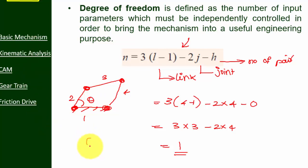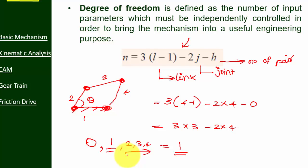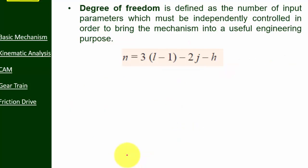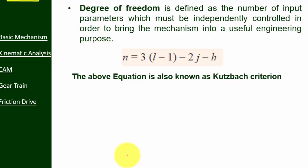If the degree of freedom is zero, it is not a mechanism but a structure — there is no movement. If the degree of freedom is one, it is called a simple mechanism. If the degree of freedom is two, three, or four, complexity increases. The four-bar mechanism is an example of a simple mechanism because it has only one degree of freedom. This formula is known as Grashof's criterion.